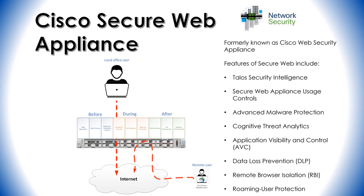Last but not least, there's roaming user protection. The web appliance integrates with Cisco Secure Mobility Client, formerly known as AnyConnect. Using AnyConnect, a VPN tunnel is created that redirects traffic back to the on-premise Secure Web Appliance.